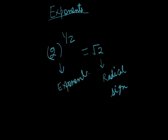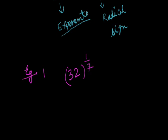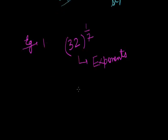Till now we have understood what exponents are. Exponents are terms which are expressed in terms of powers. For example, 32 whole raised to the power 1 by 7 is in the form of exponents, which means it is expressed as a power. This same term can also be written as the 7th root of 32, which is in radical sign form.